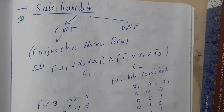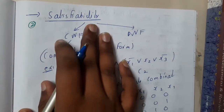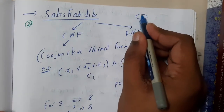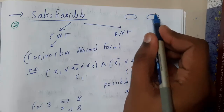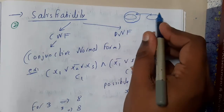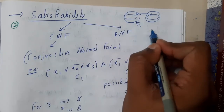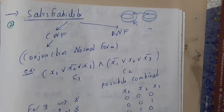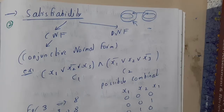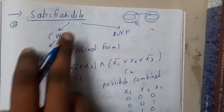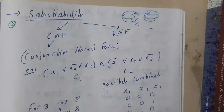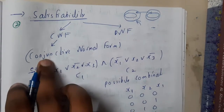Basically, satisfiability is when you are solving a particular problem and if two problems have some similarities, if one problem is solved then indirectly the other problem is also solved with the help of that solution. This concept is also called reduction. Satisfiability can be represented in two ways — CNF and DNF — but basically we will be using CNF, that is conjunctive normal form, in this chapter.